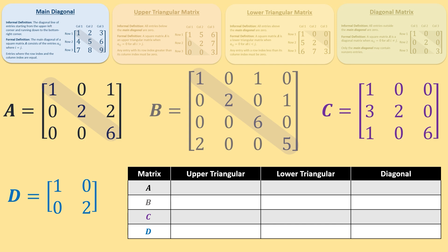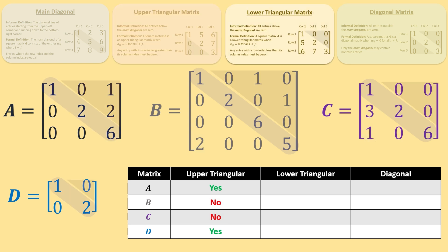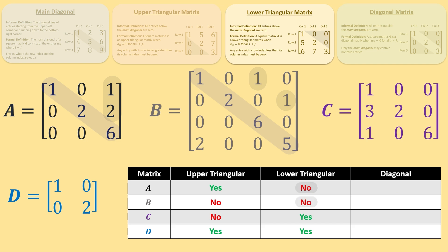The main diagonal of each of the square matrices is now highlighted. If we look at the entries below the main diagonal, we see that these matrices only have zeros below the main diagonal, so they are upper triangular matrices. These other ones have at least one nonzero element below the main diagonal, so they are not upper triangular matrices. Looking at the entries above the main diagonal, we see that these matrices have only zeros above the main diagonal, so they are lower triangular matrices. These other matrices have at least one nonzero element above the main diagonal, so they are not lower triangular matrices.